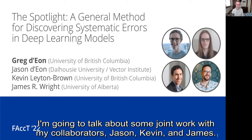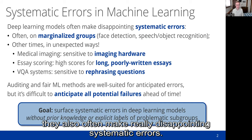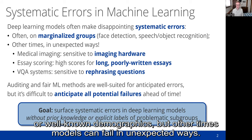While deep learning models show superhuman performance on a surprising number of domains, they also often make really disappointing systematic errors. Often this looks like poor performance on marginalized groups like protected classes and well-known demographics, but other times models can fail in unexpected ways. Medical imaging classifiers can be sensitive to the choice of imaging hardware.